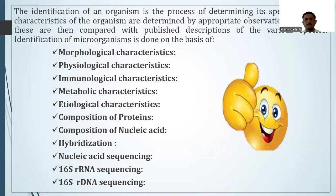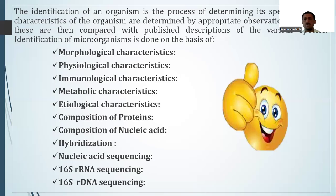The identification of an organism is the process of determining its species. When we talk about identification, we will use different methods with respect to their morphological, physiological, and biochemical characteristics, and on that basis we can place that particular organism into a particular group. By this way, we can reach up to the species level to clearly identify whether that organism is already reported or whether it is a newly isolated organism. Following particular rules, we can complete the nomenclature of that organism and place it into a particular group.